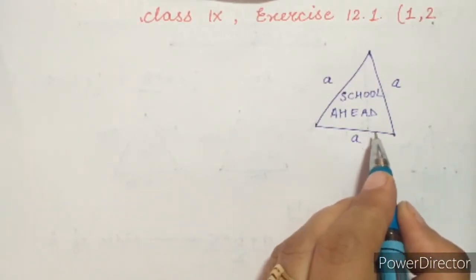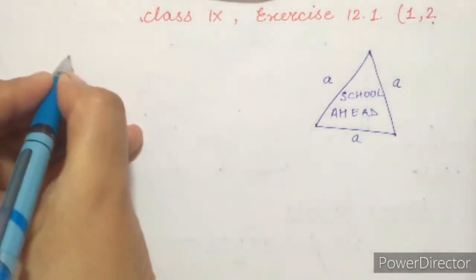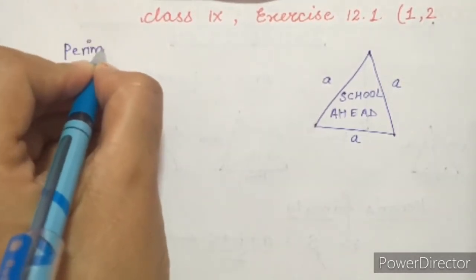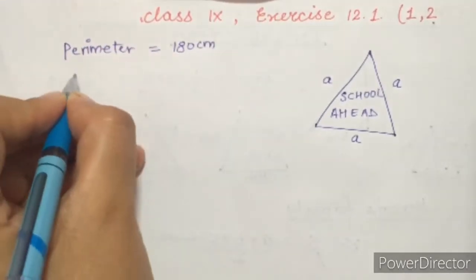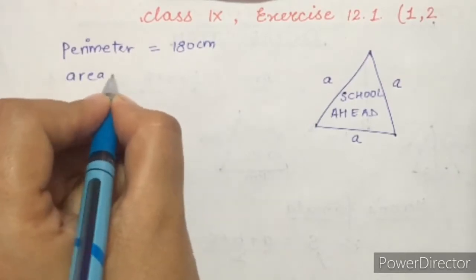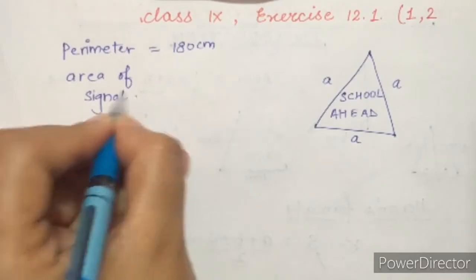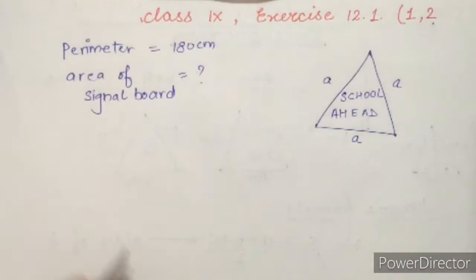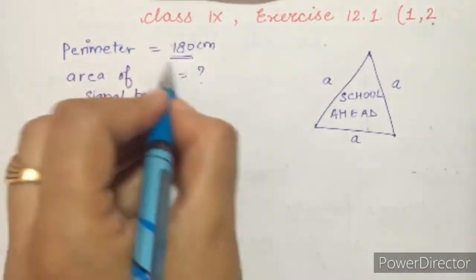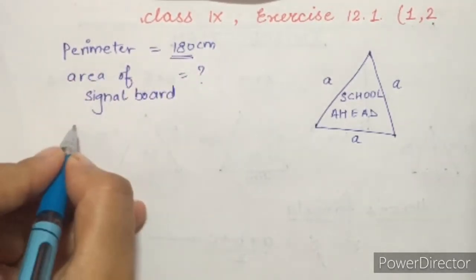We will find the area of the signal board using Heron's formula, as mentioned in the question. The given information is: the perimeter of the triangle is 180 centimeters. We have to find the area of the signal board. The most important information given to us is the perimeter, which is the sum of all sides.